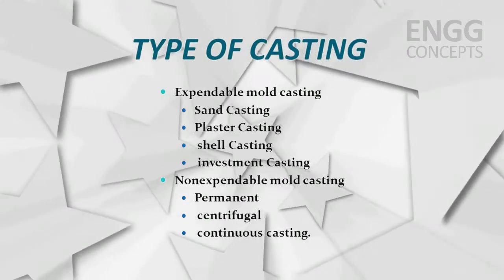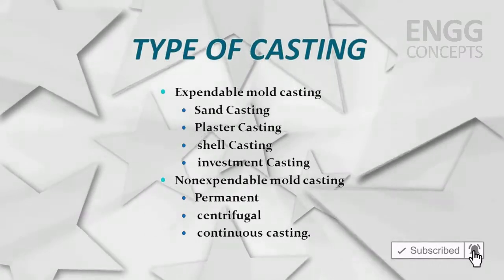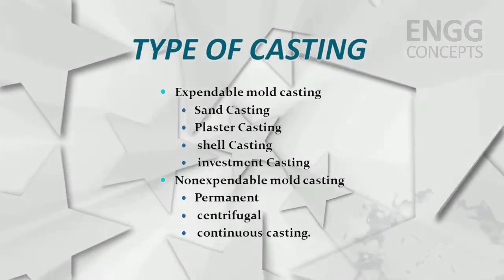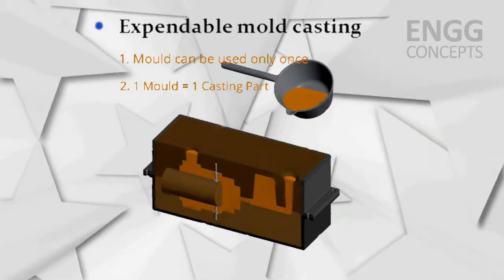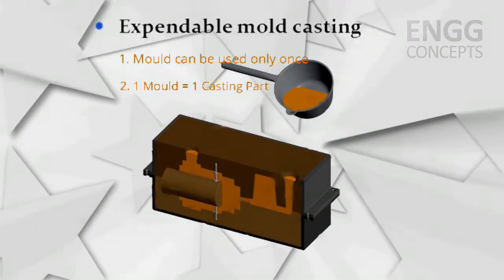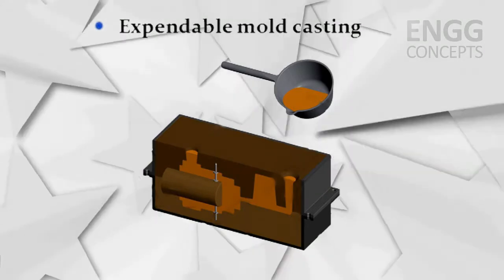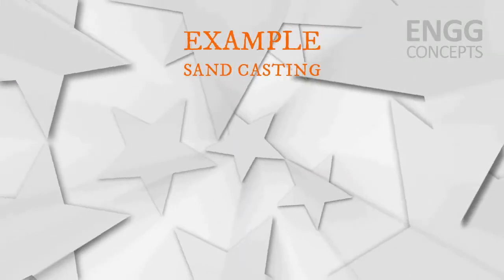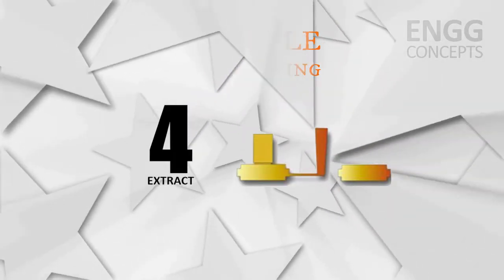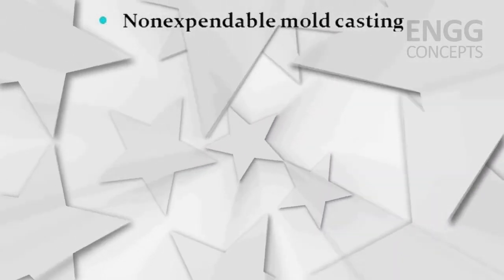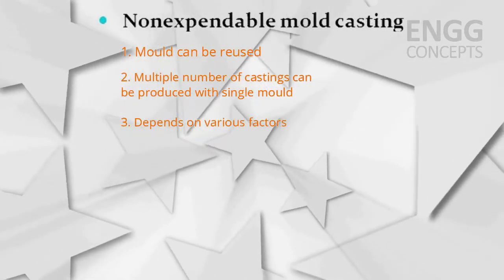The casting process is classified into two main types: expandable mold casting and permanent mold casting. In expandable mold casting, the mold can be used only once — after using the mold, it gets destroyed and we need to make a new mold for another casting. The example of expandable mold casting is sand casting. In permanent mold casting, the mold can be reused multiple times for multiple castings.